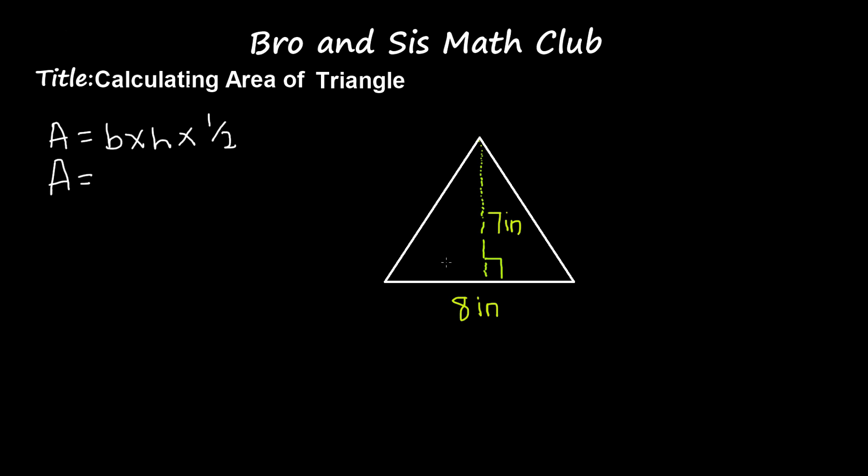Now, what we need to do is multiply 8 times 7. So, 8 times 7 times one-half. We know that 8 times 7 is 56.